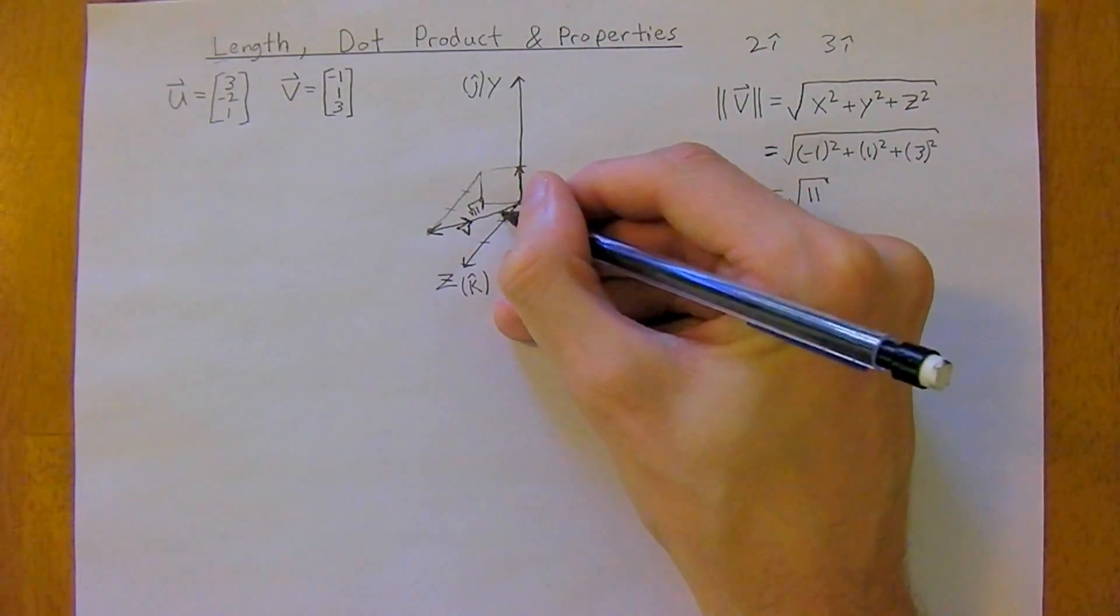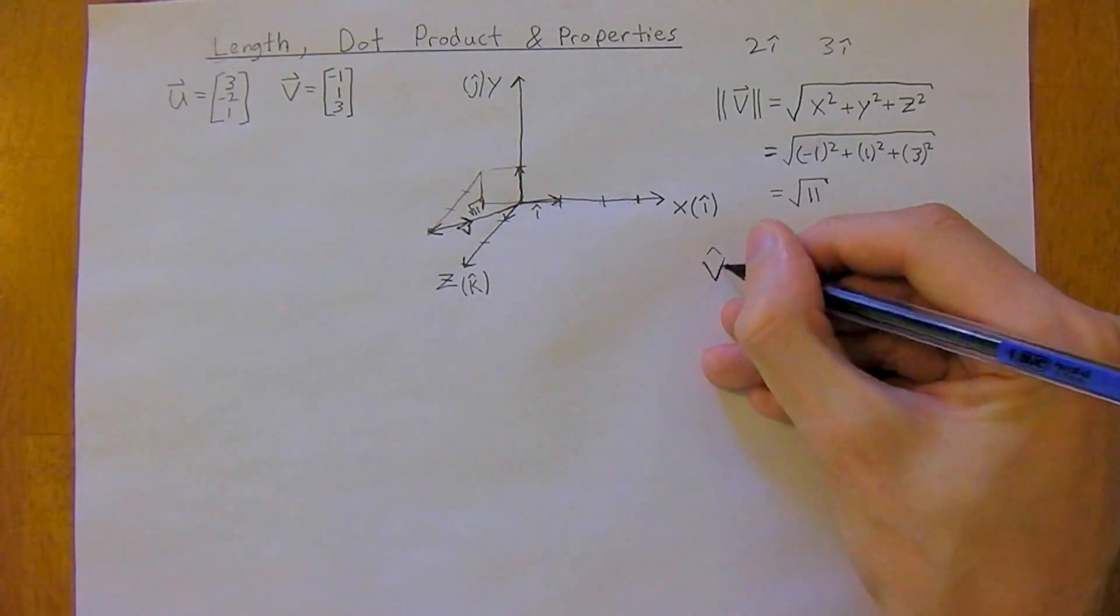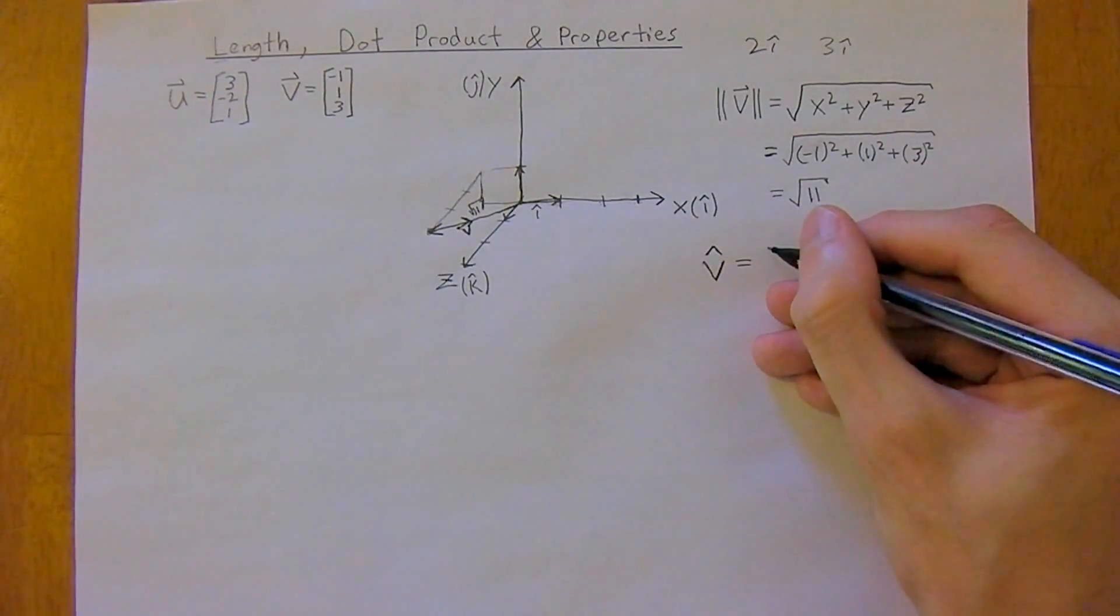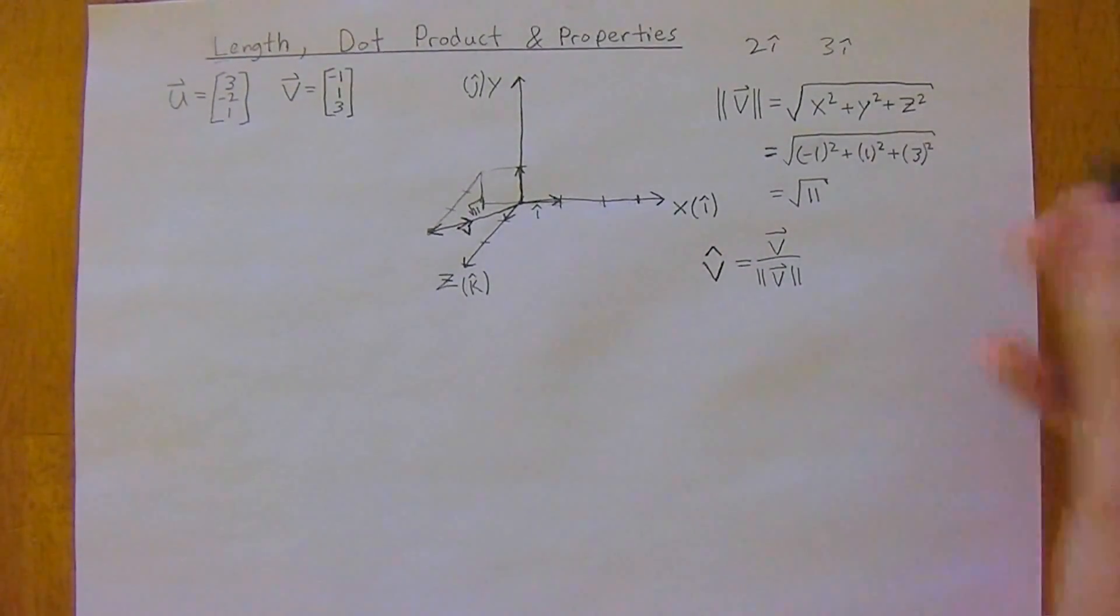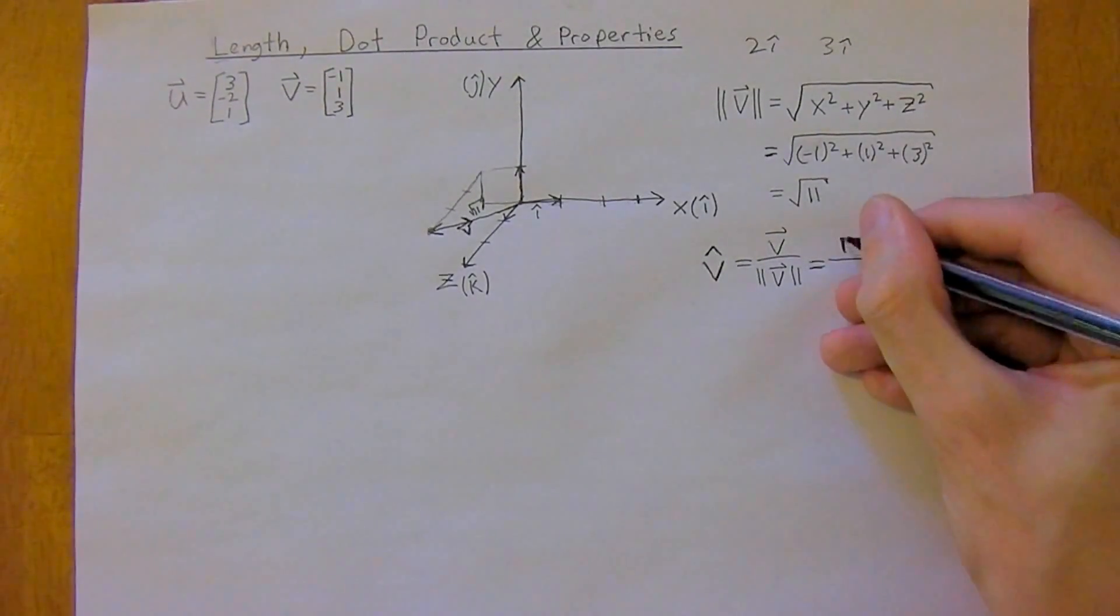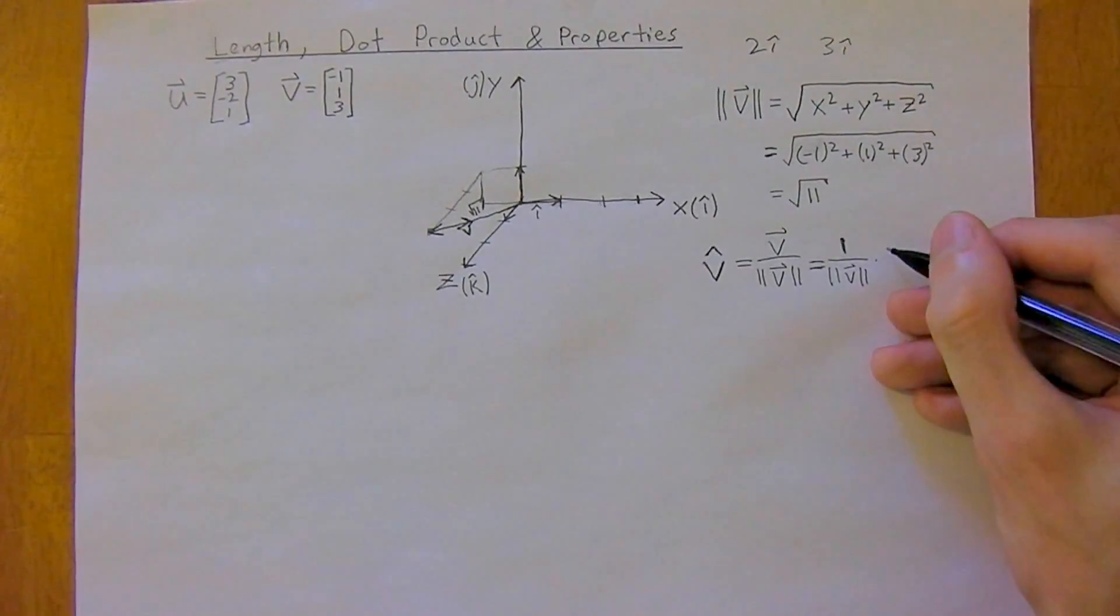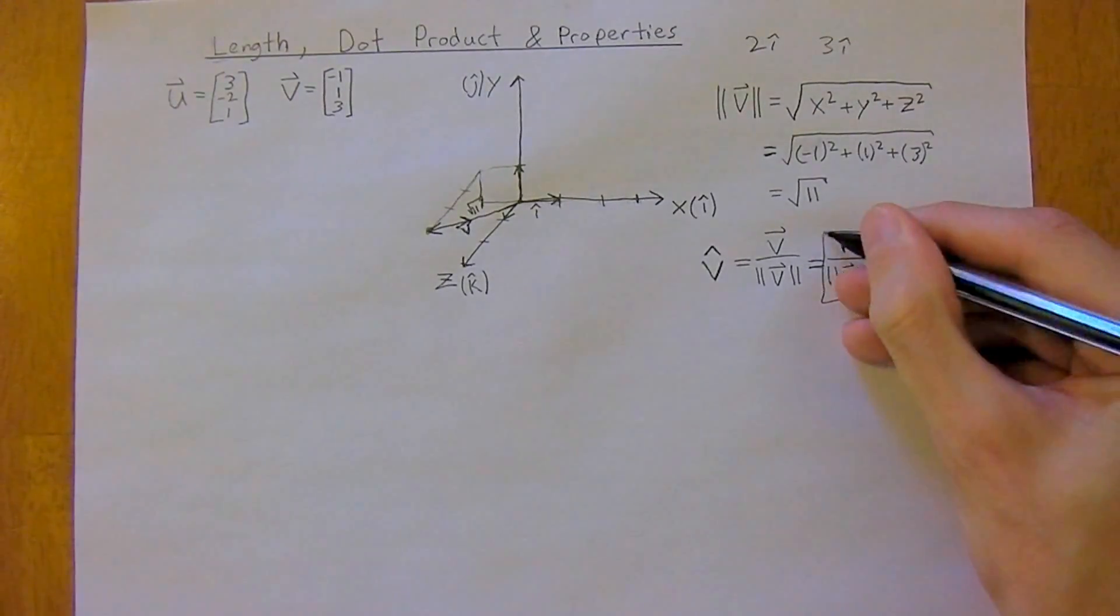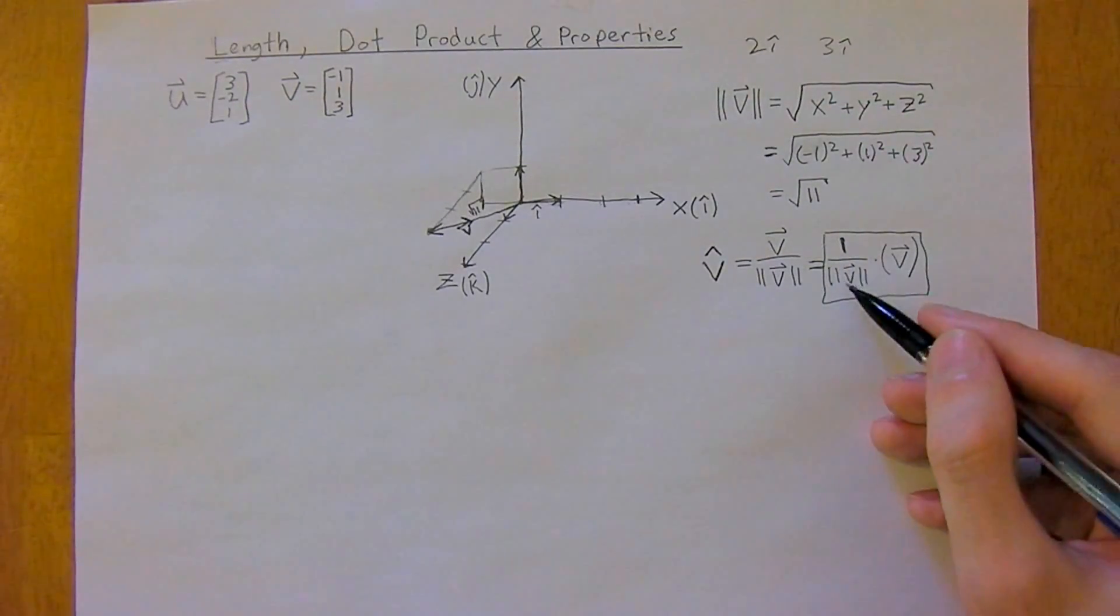And so we want to find a unit vector for v here, and we denote that with the funny little hat. It's the common terminology. And it's going to be equal to your vector v over the magnitude of vector v. But the actual way you would write this, because you can't divide with vectors, so you'd actually write it as 1 over ||v|| times your vector v is the more proper way to actually technically write it. And so we've already worked out our magnitude for v, so we have this term.